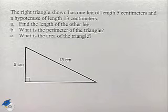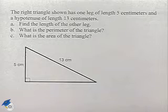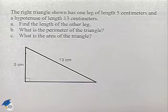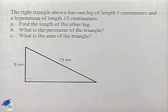Part A: find the length of the other leg. Part B: what is the perimeter of the triangle? And Part C: what is the area of the triangle?